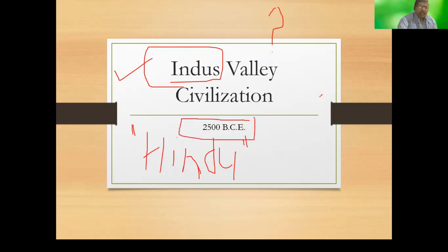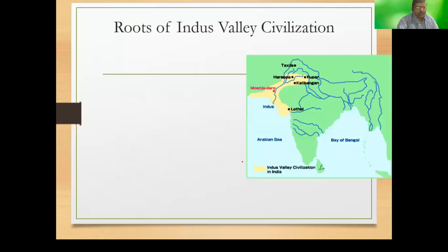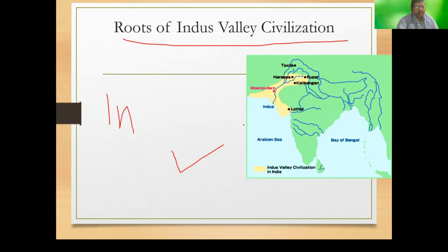The majority of experts agree that this civilization dates back to somewhere around 2500 BCE, which is approximately 4,000 to 5,000 years back in history. When we consider the Indian subcontinent during that time frame, we are talking about an area related to the mainland of the Indus River, covering what is today Afghanistan, Pakistan, and India.